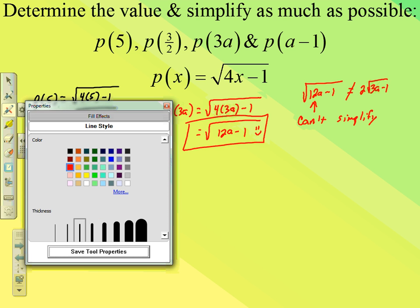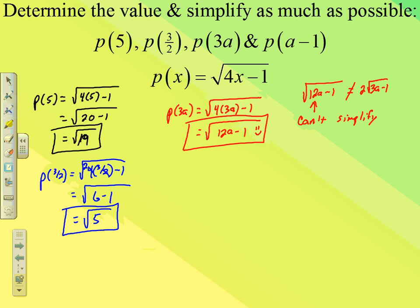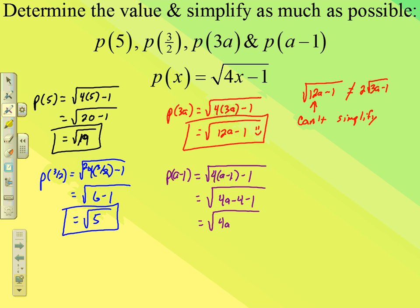For p(a-1): √(4(a-1) - 1). Distributing gives √(4a - 4 - 1) = √(4a - 5). Even though 4 is a perfect square, because it's multiplied by a and then we subtract 5, we cannot take the square root of just the 4. So this does not simplify to 2√(a - 5). The final answer is √(4a - 5).